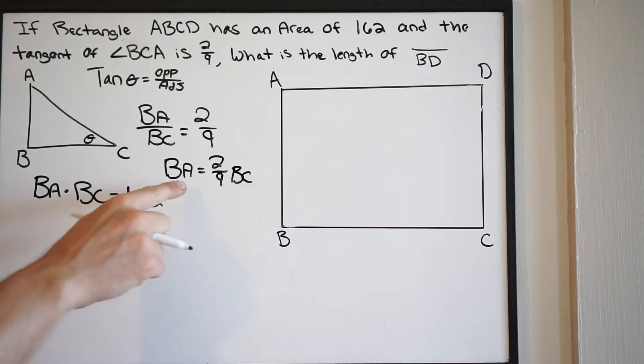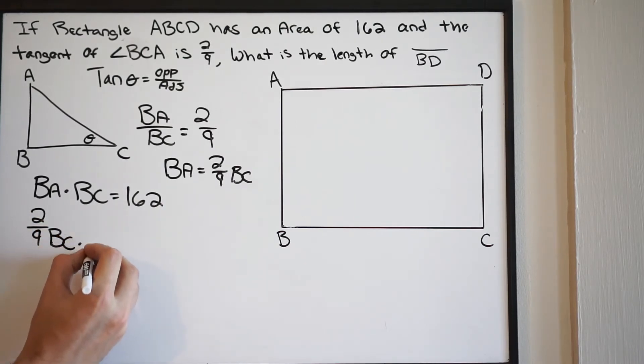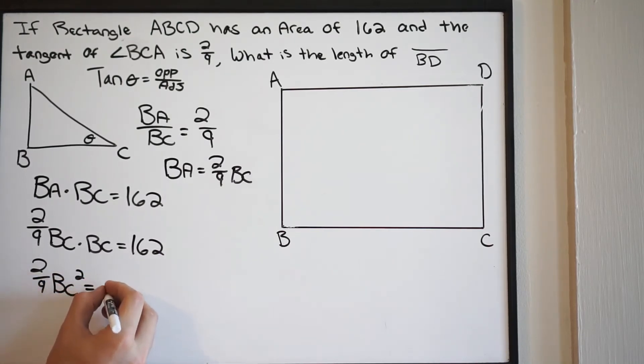So knowing this now, I'm going to take what I have here and substitute it in wherever I see BA. And then I'll be able to solve for BC. So let's plug it in. 2 over 9 BC times BC equals 162. This gives me 2 over 9 BC squared equals 162. Now let's get rid of this fraction. Let's multiply by the reciprocal, 9 over 2.